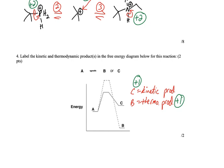Here again, all I'm asking for is label the kinetic and thermodynamic products in the free energy diagram. C is the kinetic product because it comes from the lowest activation energy. B is the thermodynamic product because it's the most stable product. That's what I was looking for.